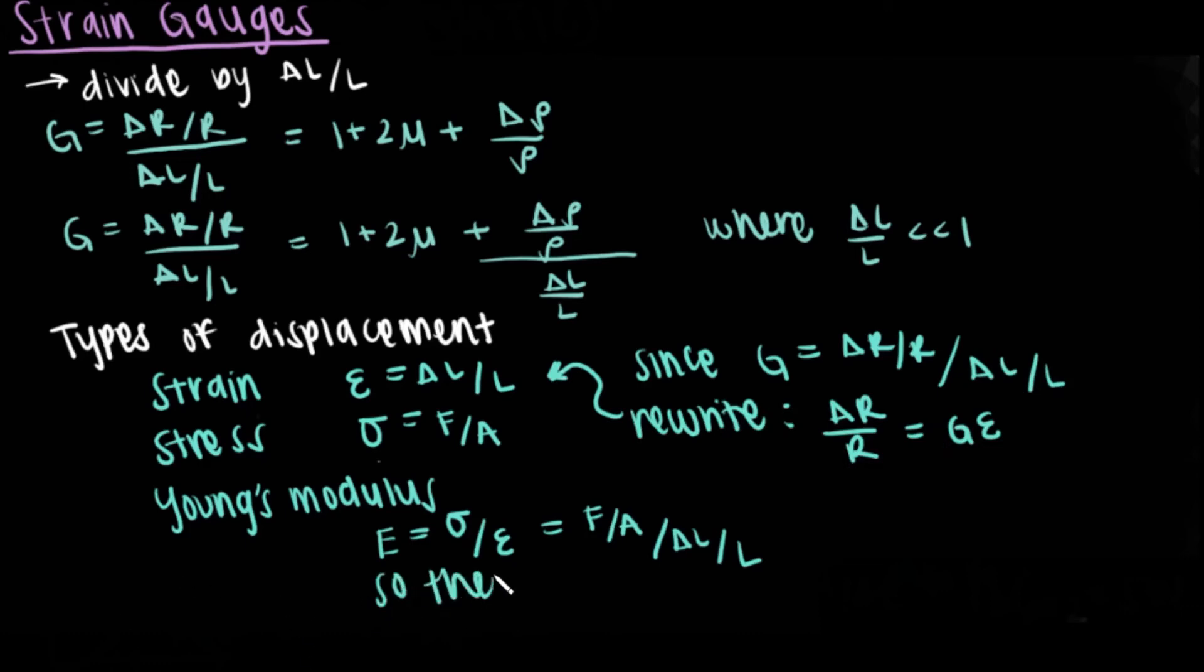Important to note also is that for strain gauges, the relative resistance is equal to the gauge factor times strain. So then, by rearranging equations, we can find that the relative resistance is equal to the gauge factor divided by Young's modulus multiplied by stress.